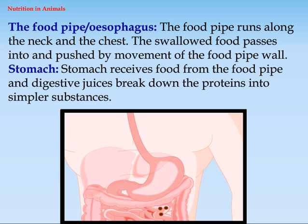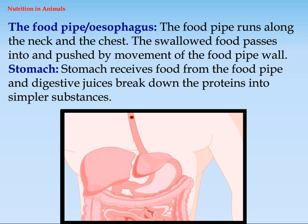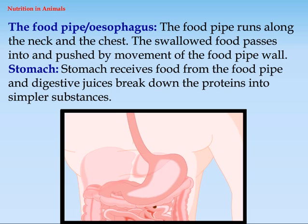Stomach: the stomach receives food from the food pipe, and digestive juices break down the proteins into simpler substances.